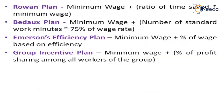The fifth is the Rowan plan, which states minimum wage plus the ratio of time saved multiplied by the minimum wage. For example, if the standard time is 100 hours and the worker completes in 90 hours, 10 hours are saved, so the ratio is 90/100 = 0.9. That 0.9 multiplied by the minimum wage is added as the incentive. Similarly, if out of 80 hours the worker finishes in 70 hours, then 70/80 multiplied by the minimum wage is the incentive percentage added.